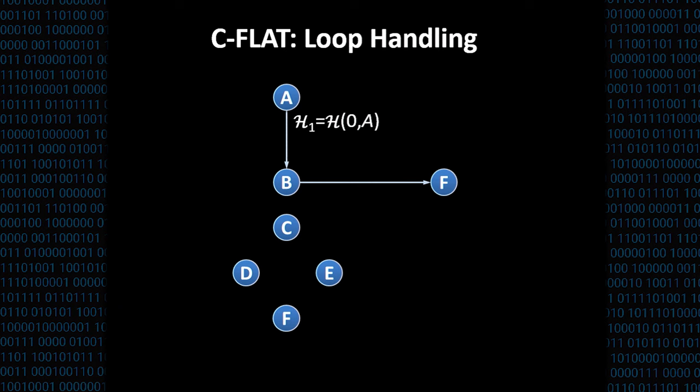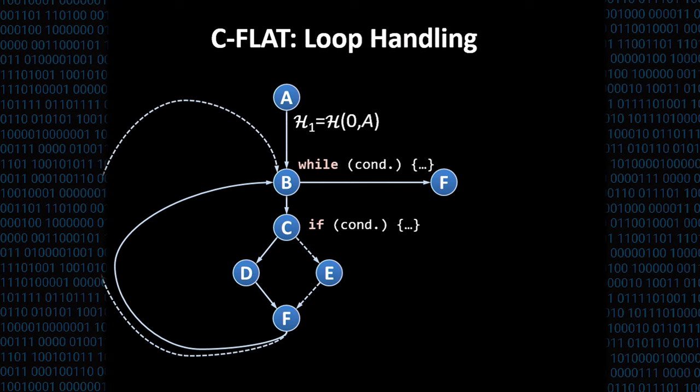So consider for this a slightly modified control flow graph, where we have a while condition, and inside the loop we also have an if condition. So there are two possible loop paths, one that goes over node D, and another one that goes over node E. We start the hash calculation as before, but when we figure out that a loop is entered here at node B, then we start a completely new cumulative hash chain, indicated by the new start value of zero.